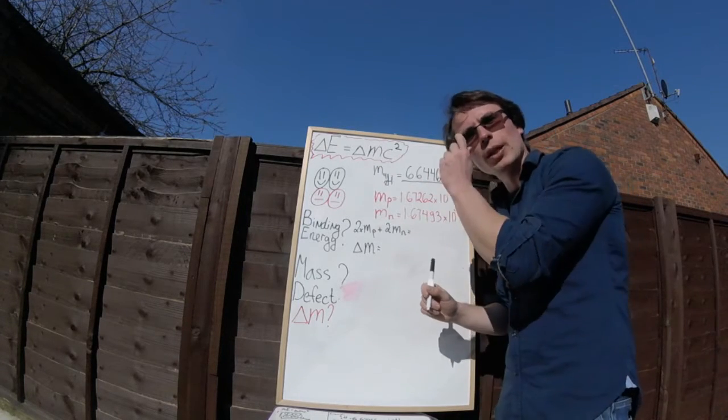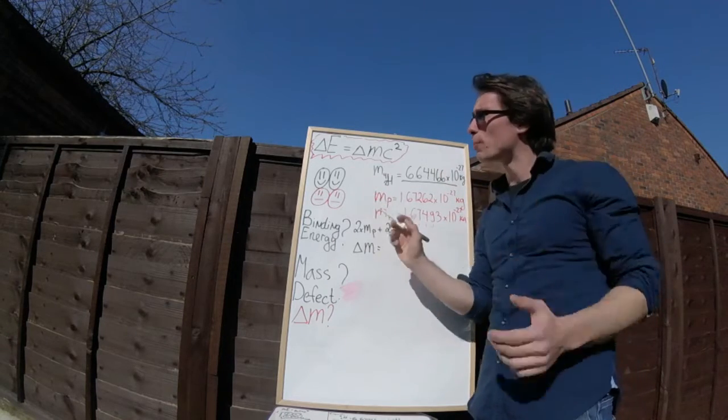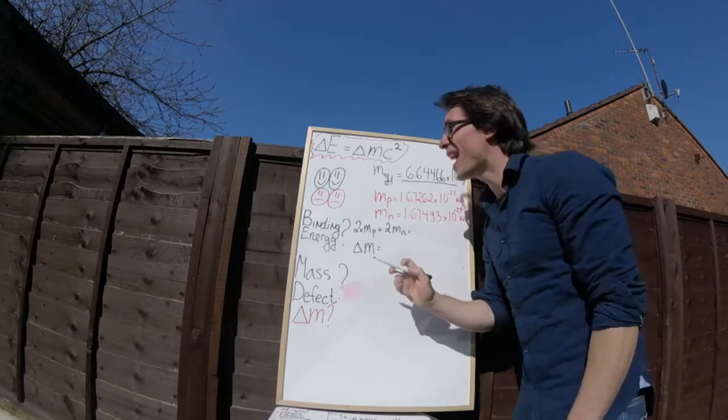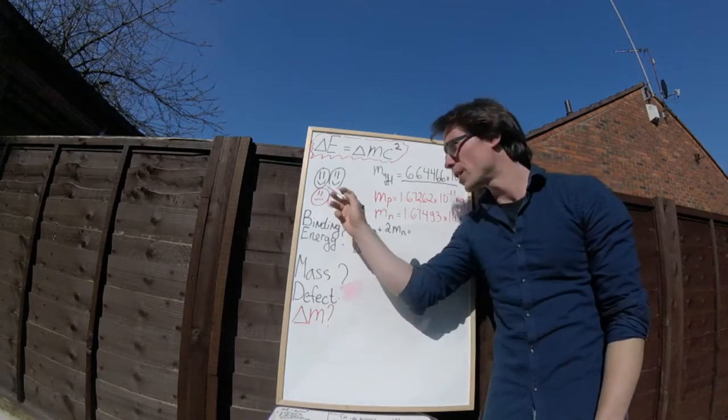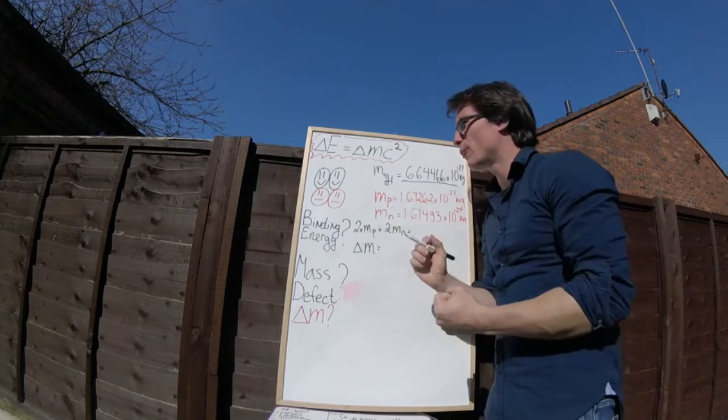Let's imagine a little alpha particle. An alpha particle consists of two protons, as you can see the positive, and two neutrons, as you can see, they're quite neutral. They're bound together by the strong nuclear force.